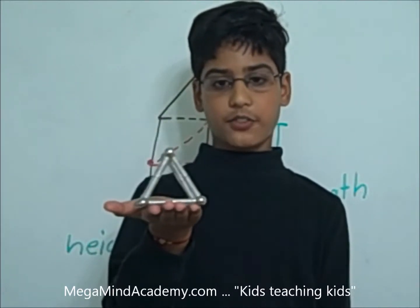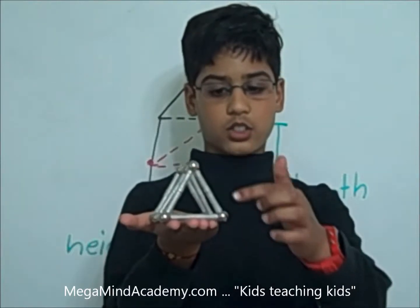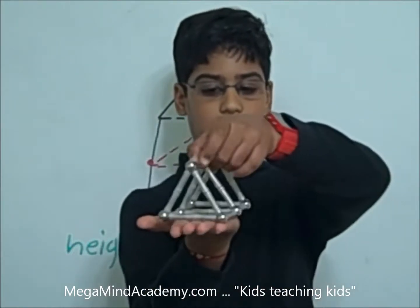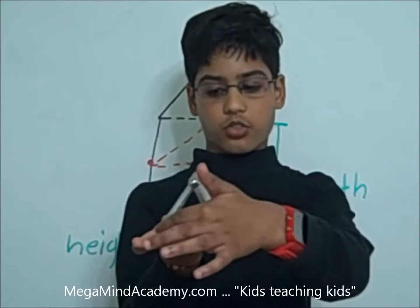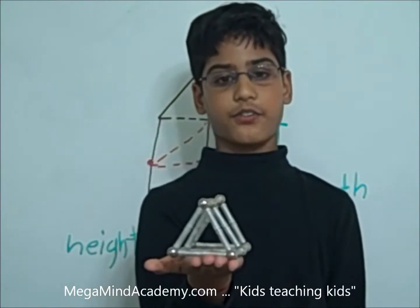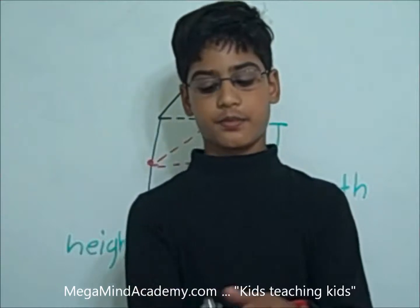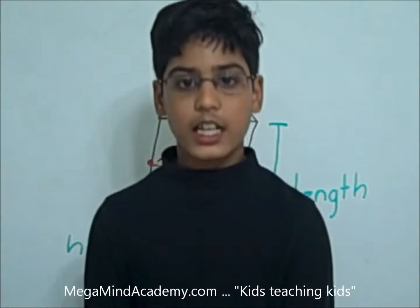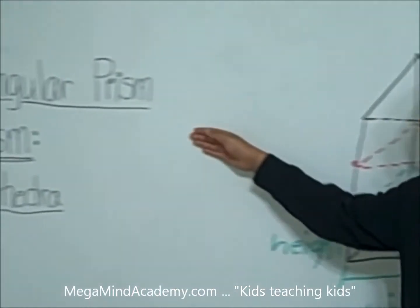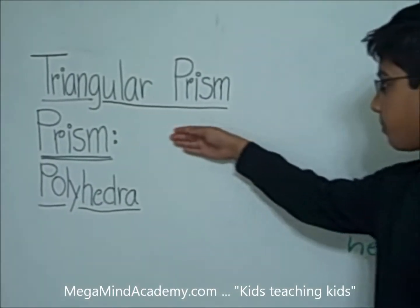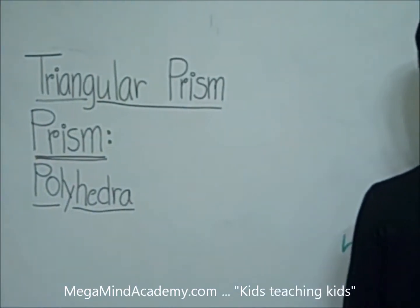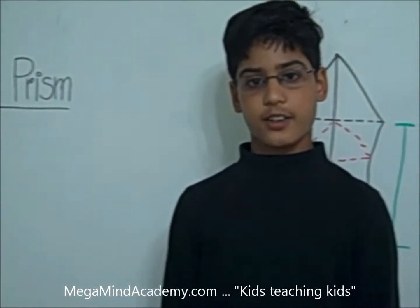Now let's see how many vertices there are: one, two, three on this end, and one, two, three on this end — so that makes it have six vertices. Today we learned about triangular prisms, prisms, and polyhedra. Thank you for watching this video.